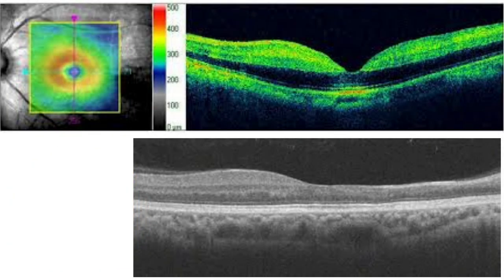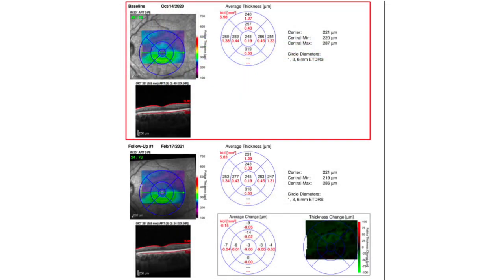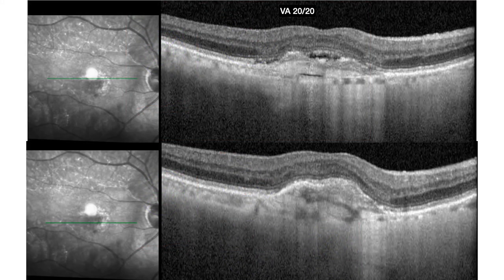Here is a patient where eventually the infarcted retina died over time. We see a hole, and this was a branch retinal artery occlusion — the superior retina is thin, representing loss of tissue. Here is another example of fibrovascular PED, showing nicely a hyperreflective vessel. Interestingly, retinal vessels on OCT are hyporeflective, but choroidal vessels appear hyperreflective.